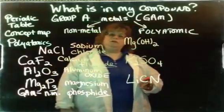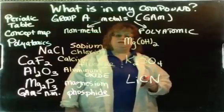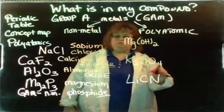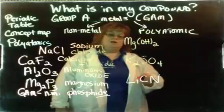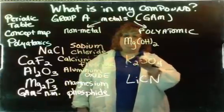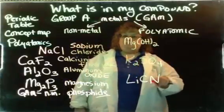Now let's take a look at group A metals attached to polyatomics. I'm going to go to these middle two, or the middle and the end one first. On the concept map, it says name the metal, and then name the polyatomic.